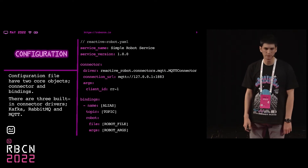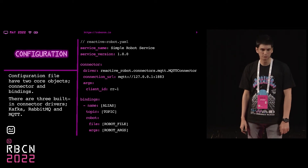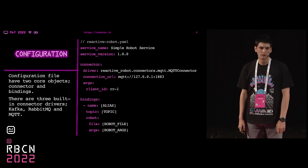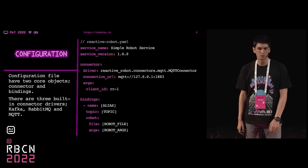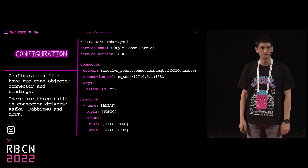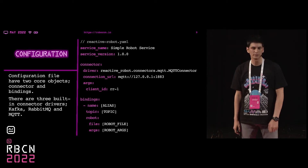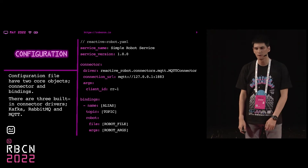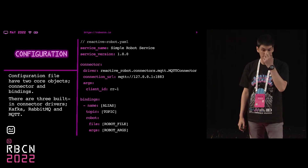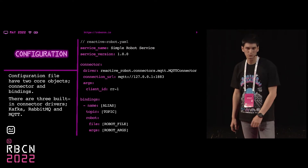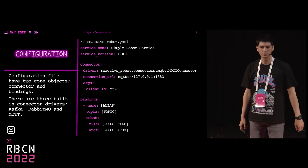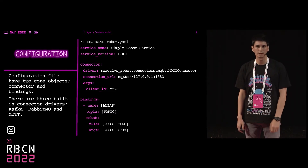The service name and service version properties declare the identity and versioning of the process, and this information is prompted immediately when you start the service. The connector object has properties to configure connections to event sources. The driver property is the Python class injected by Reactive Robot to achieve the connection. In addition to the existing MQTT, RabbitMQ, and Kafka connector classes, you can implement a custom connector class as long as it shares the same Python path. The connection URL property declares the schema, host, and port of the event source, and the args property is an object passed to the connector class's initializer as keyword arguments.